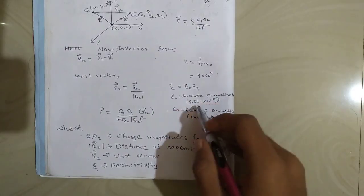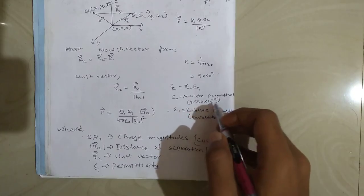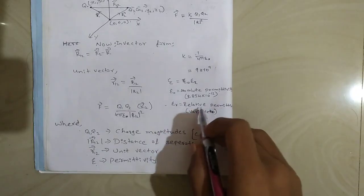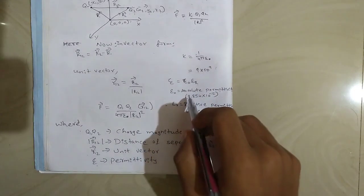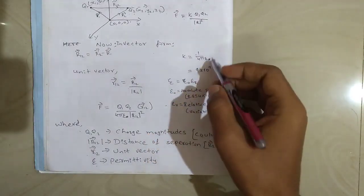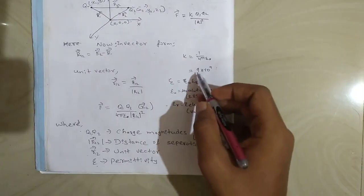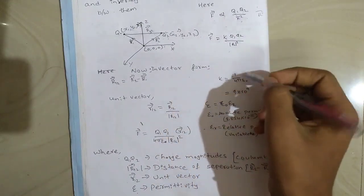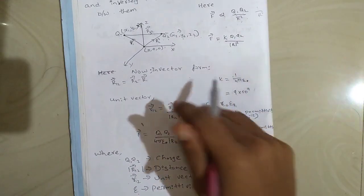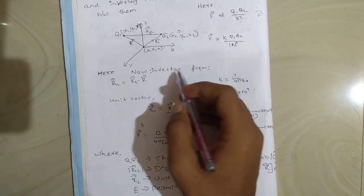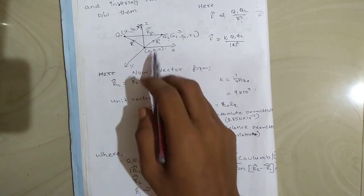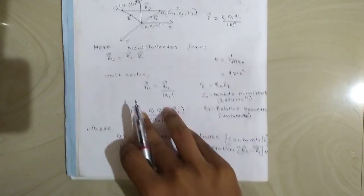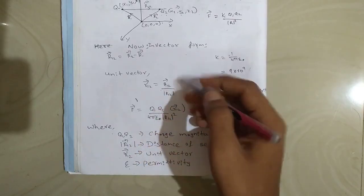Epsilon naught is the absolute permittivity, with a value of 8.854 into 10 to the power minus 12. Epsilon r is the relative permittivity, which is always variable and not constant. Substituting epsilon naught, the k value becomes 9 into 10 to the power 9. In vector form, r12, the distance between the two charges, is r2 minus r1, and the unit vector small a-r12 equals r12 divided by the magnitude of r12.